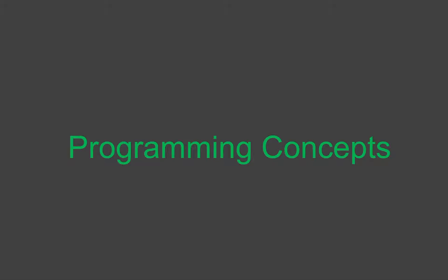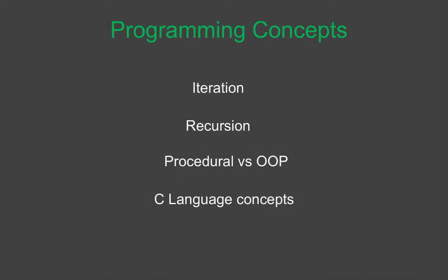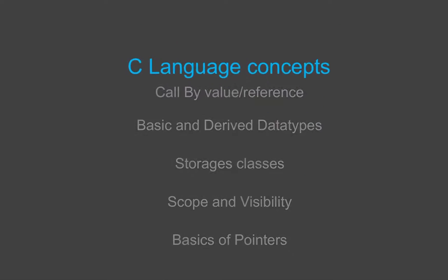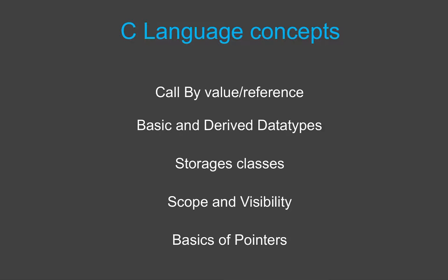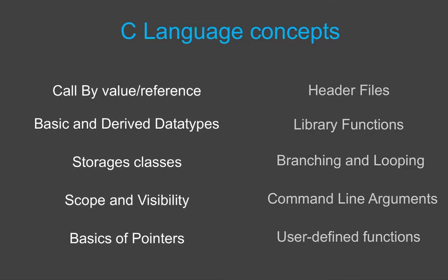The next major topic is programming concepts. In that we have iteration, recursion, procedural versus object-oriented programming, and we also have C language concepts. The main C language concepts that need to be noted are: call by value or reference, basic and derived data types, storage classes, scope and visibility, basics of pointers, header files, library functions, branching and looping, command line arguments, and user defined functions.